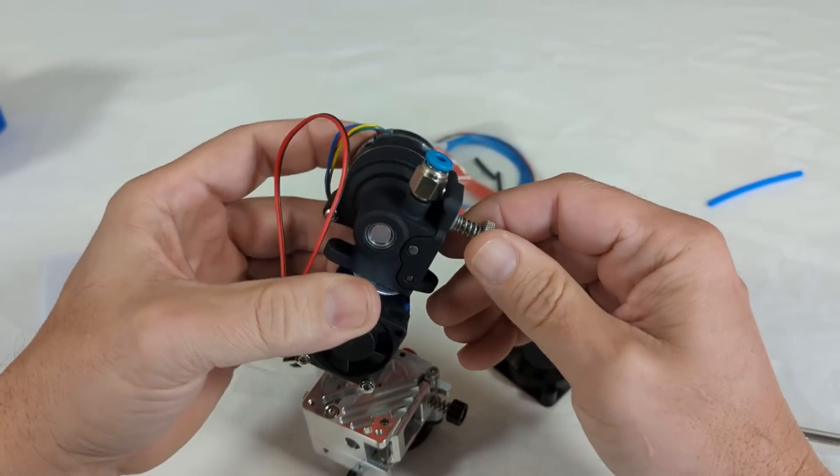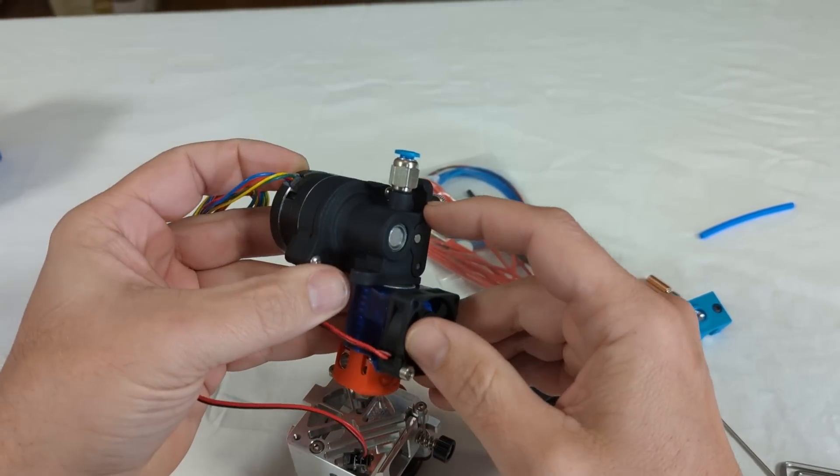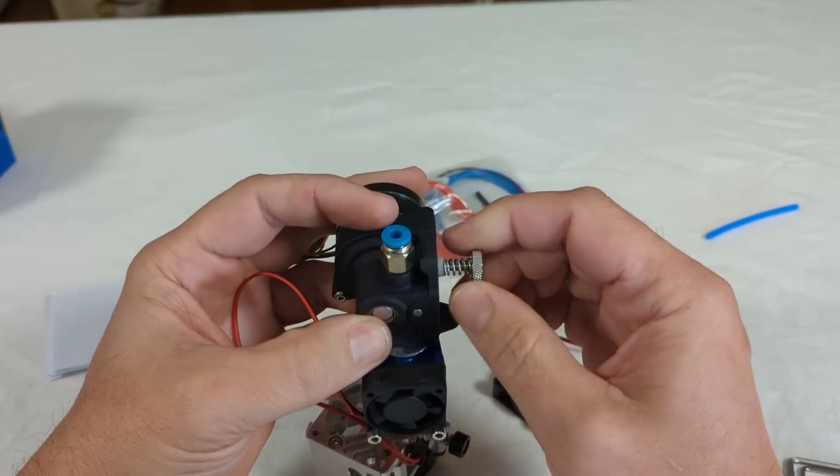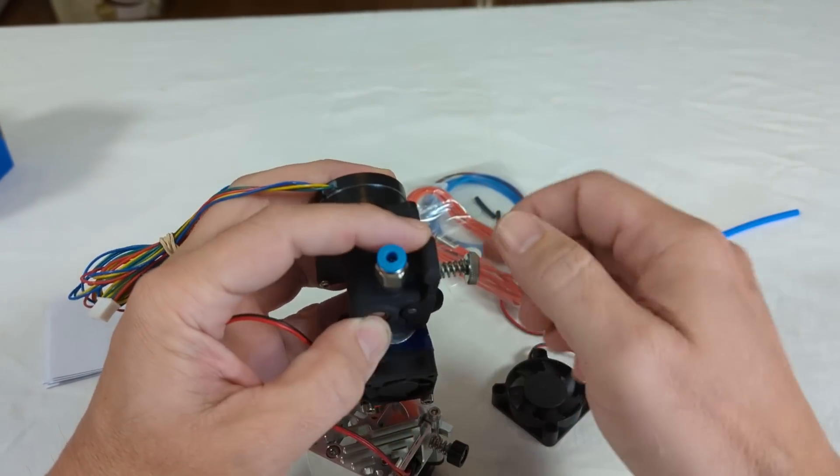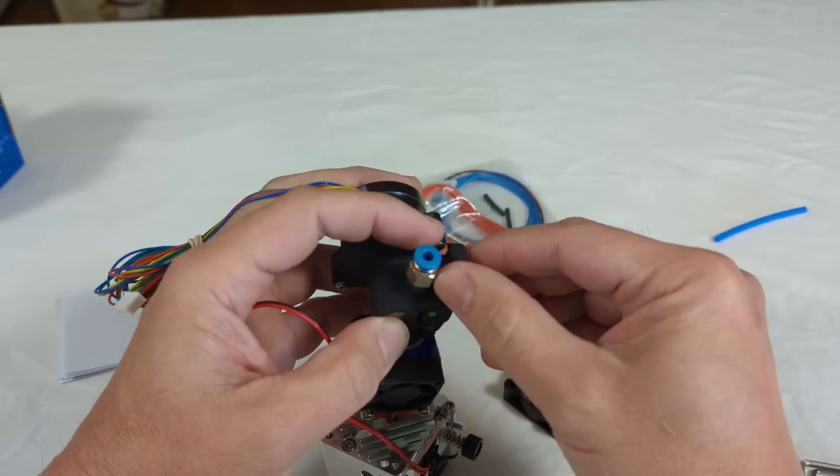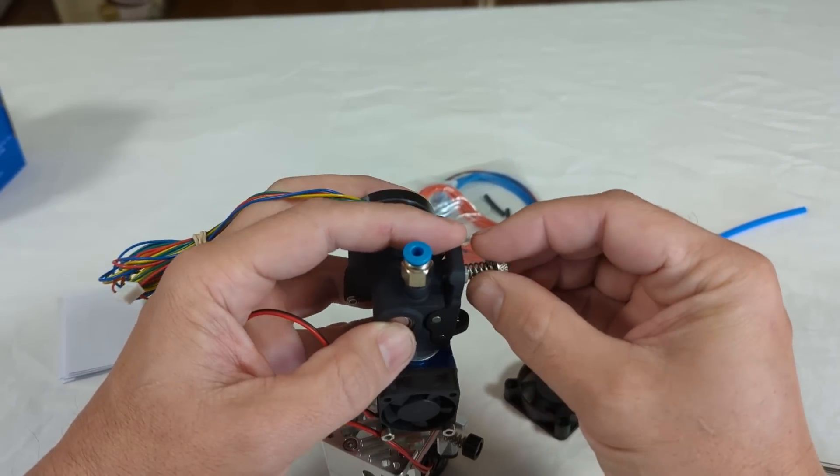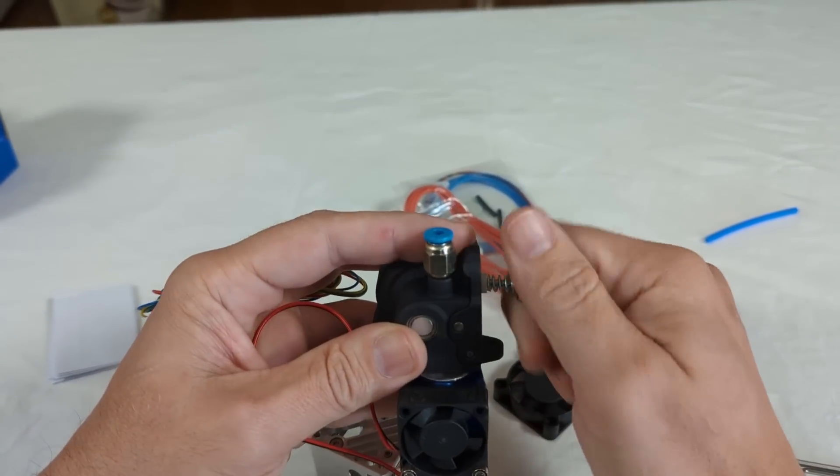It's worth bringing that up because if you remember here on the Orbiter extruder that I reviewed several months ago, the filament loading path is quite challenging there and I needed to open it all the way up in order to get the filament easily in there.